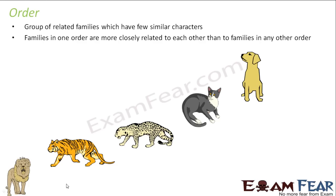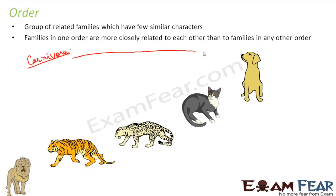But if you consider the food habit, you see that all of them share a similar food habit. All of them are carnivorous animals — they all feed on flesh. So that is how we can classify dogs with them. We say that they are of the same order, and that order is Carnivora. So they all belong to Carnivora.